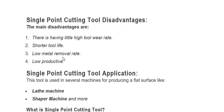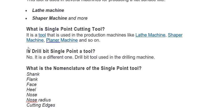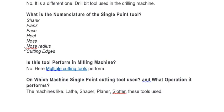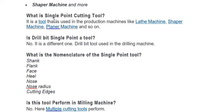Single point cutting tools are used for various operations on lathe machine, shaper machine, and planer machine. From the paper analysis: a single point cutting tool is a tool used for production in machines like lathe, shaper, planer, and so on.